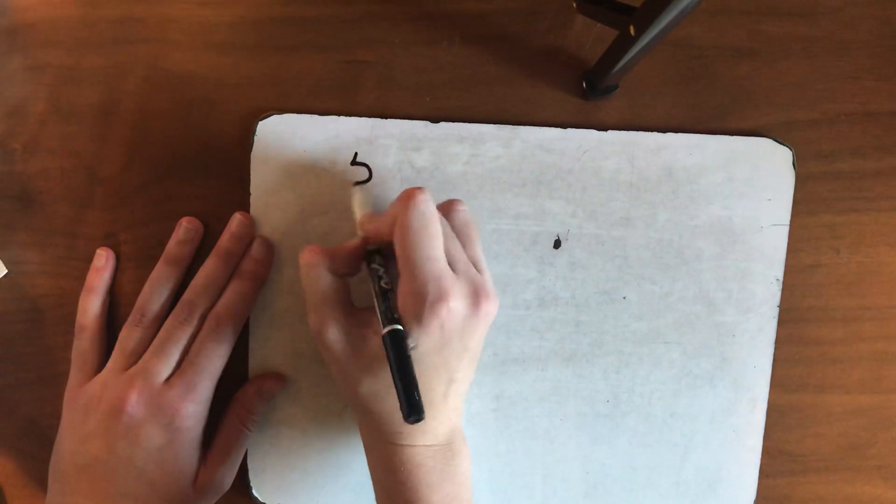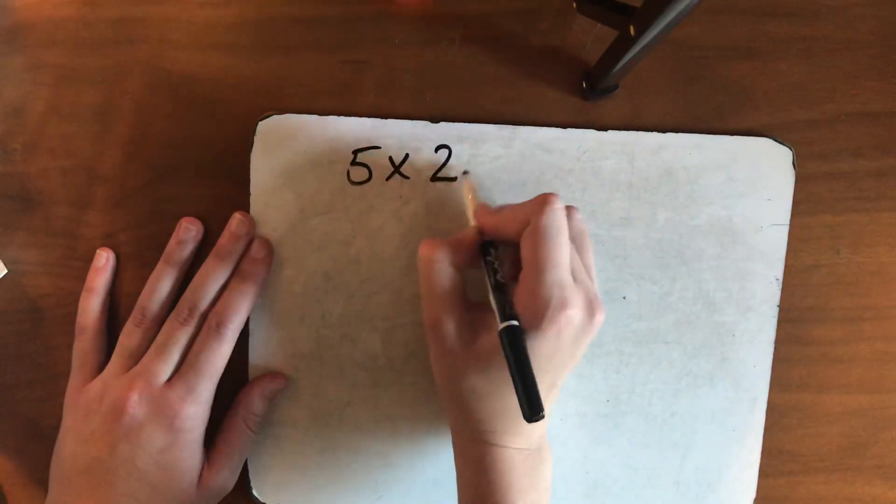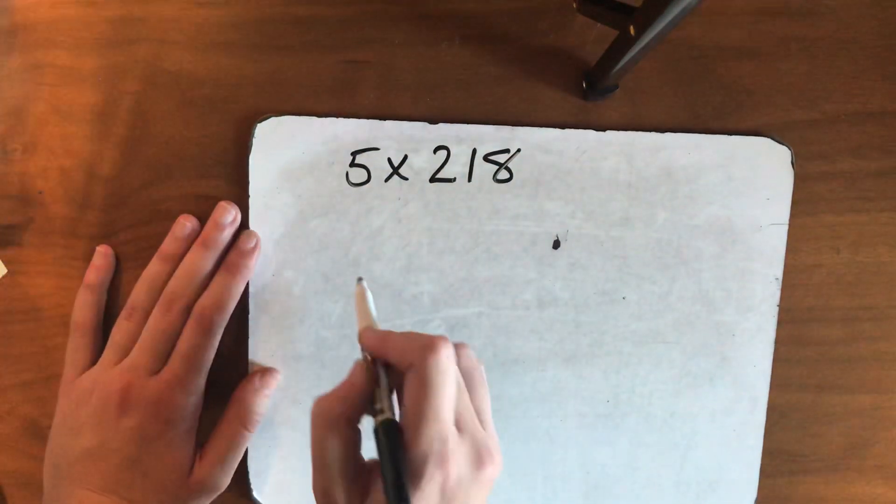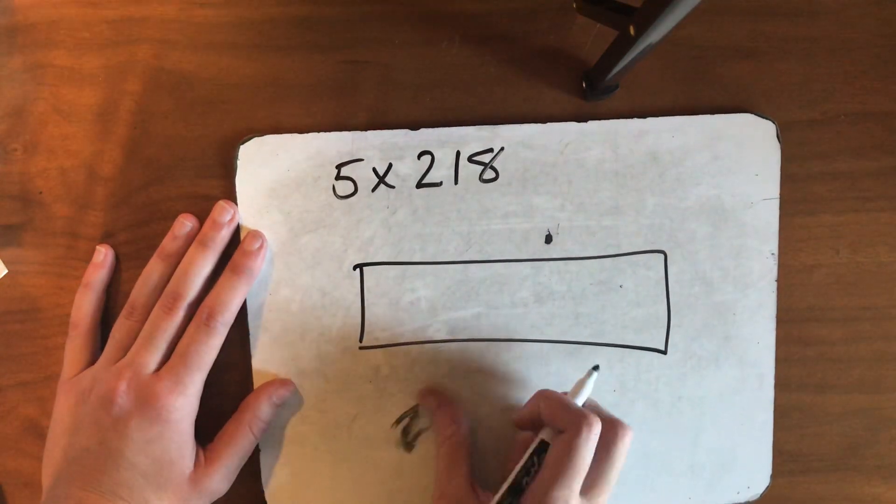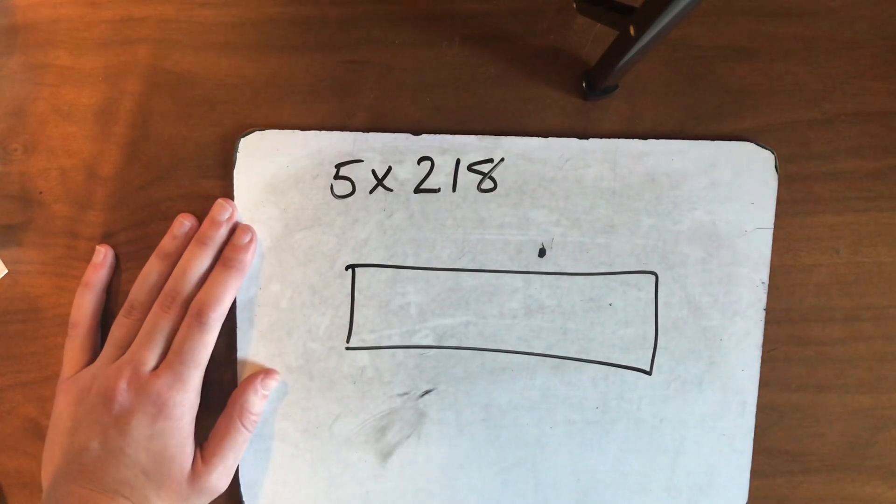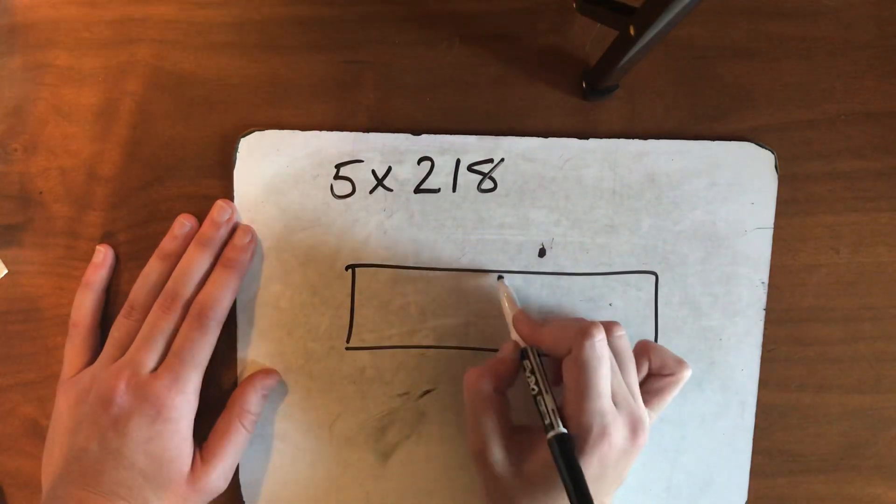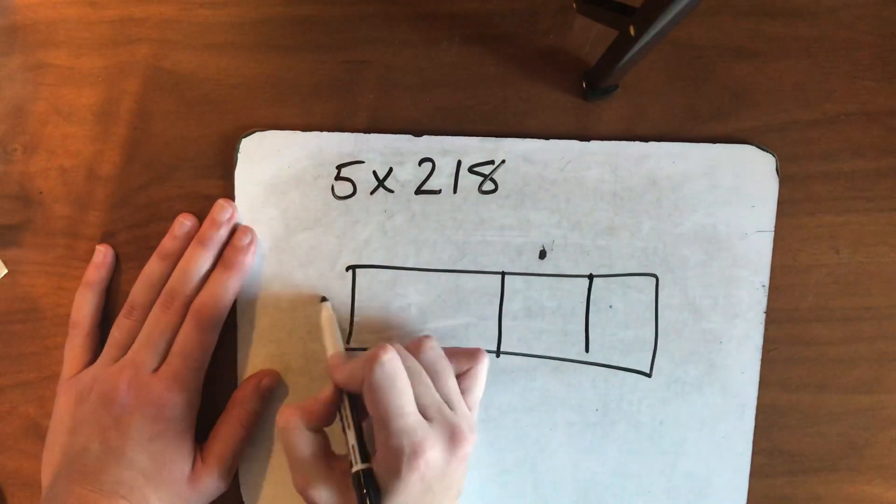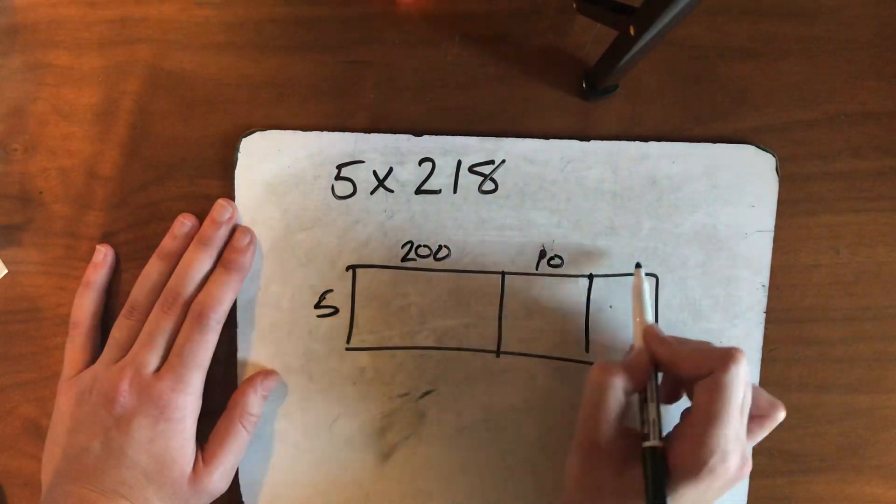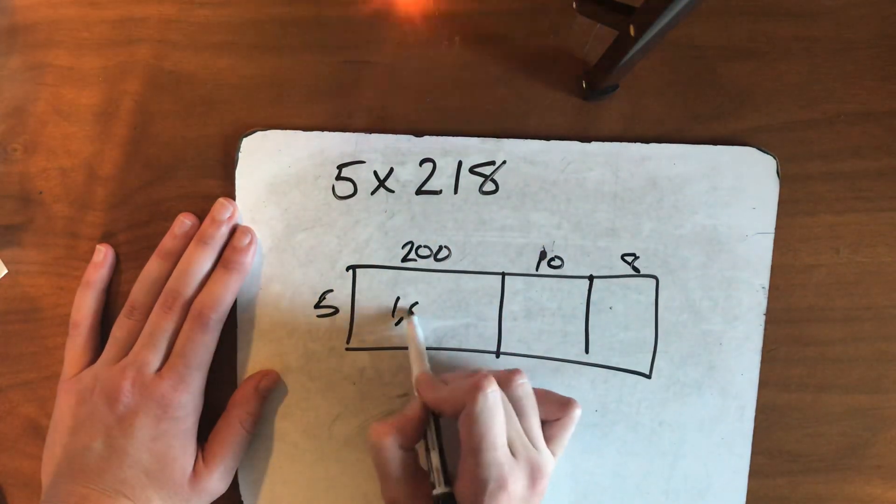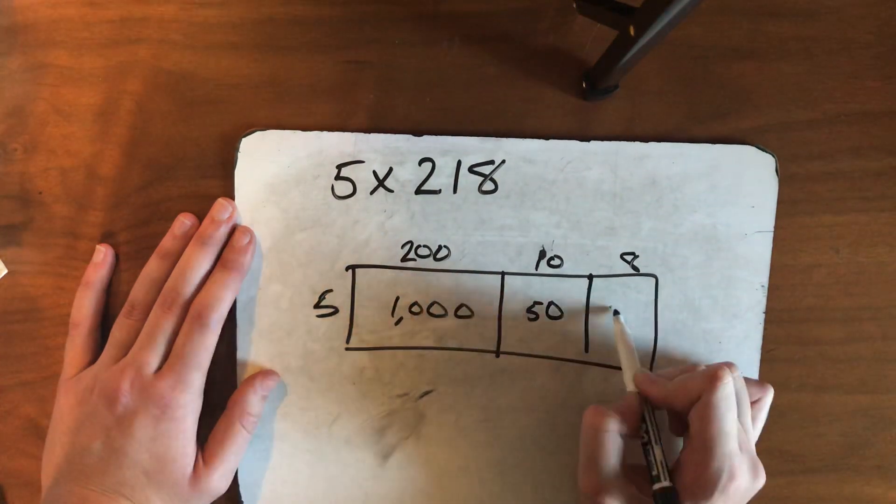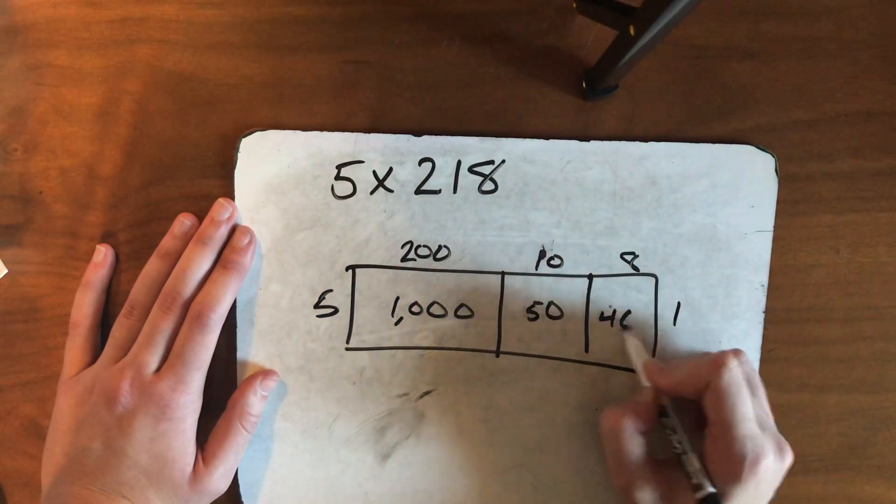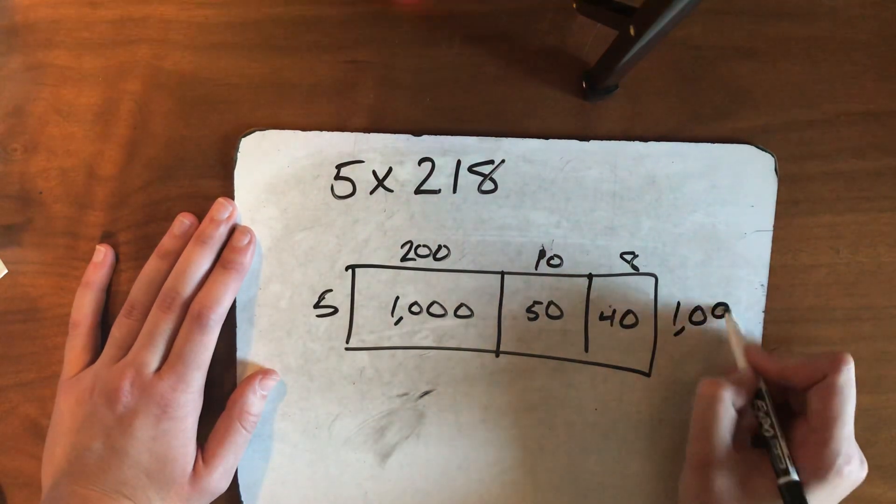Let's try another one. Show me this one with your place value blocks. To check. 5, 200, 10, 8, 1,000, 50, and 40, 1,000, 90. 1,090.